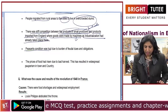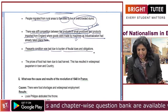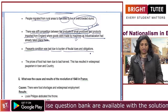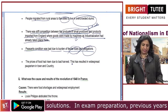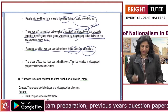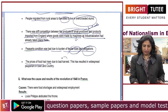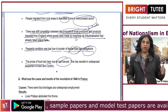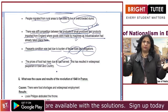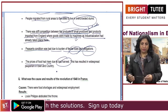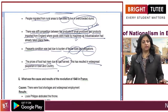The peasants' condition was also bad due to the burden of feudal dues and obligations — they were under great debt. The prices of food had also risen because of bad harvests; when supply declined but demand remained high, prices increased. This led to widespread poverty going on in both the country and the town.